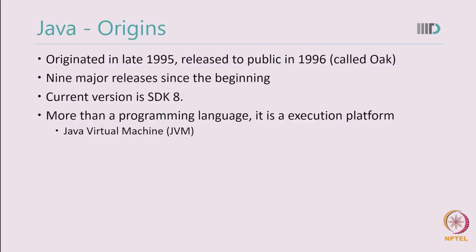You may download the latest Java Software Development Kit from the Oracle website and start programming in Java right away. More than a programming language, Java is actually an execution platform. You may have already heard the term Java Virtual Machine. The JVM provides a platform to run Java programs, and is instrumental in making sure that once you have compiled a Java program, you can run it on different types of platforms.